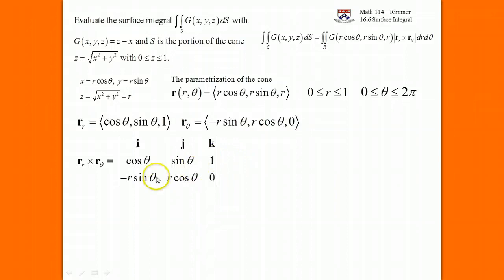So we set up the cross product where we cross out i's column and i's row, and we end up with 0 minus r cosine theta. We cross out j's column and j's row. We end up with 0 plus r sine theta, but remember j's part of the cross product gets a negative on it.